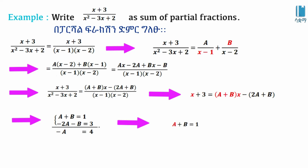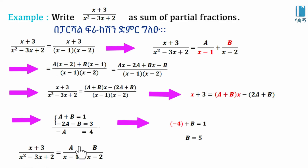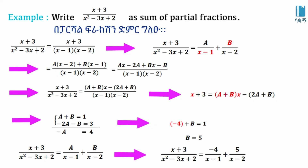With A = -4, substituting back: -4 + B = 1, so B = 5. Therefore the partial fraction decomposition is: -4 over (x - 1) plus 5 over (x - 2). This completes the partial fraction decomposition.